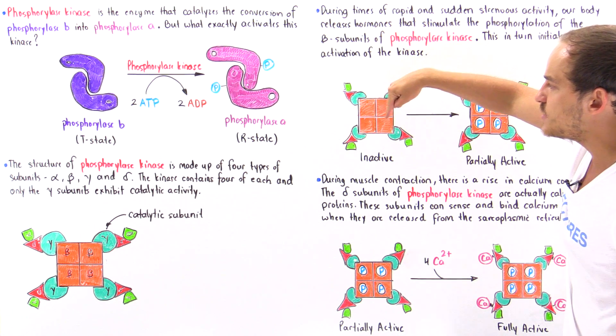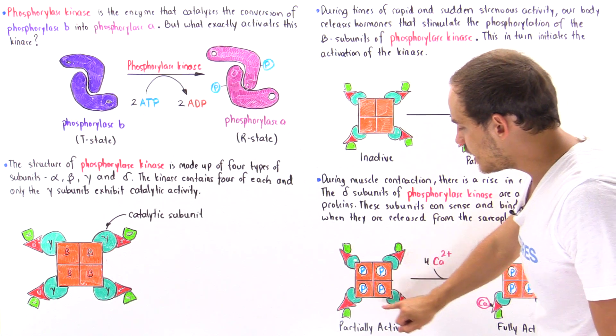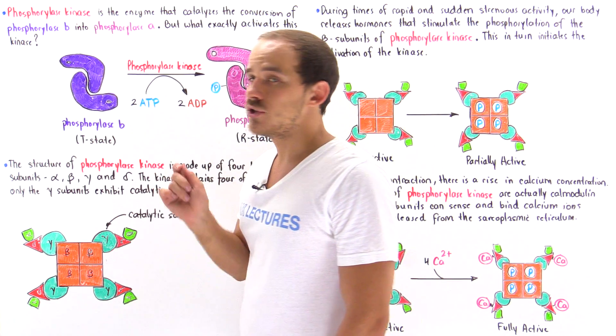The phosphorylation of these beta subunits, as well as the binding of the calcium ions on these red delta structures, the calmodulin subunits.